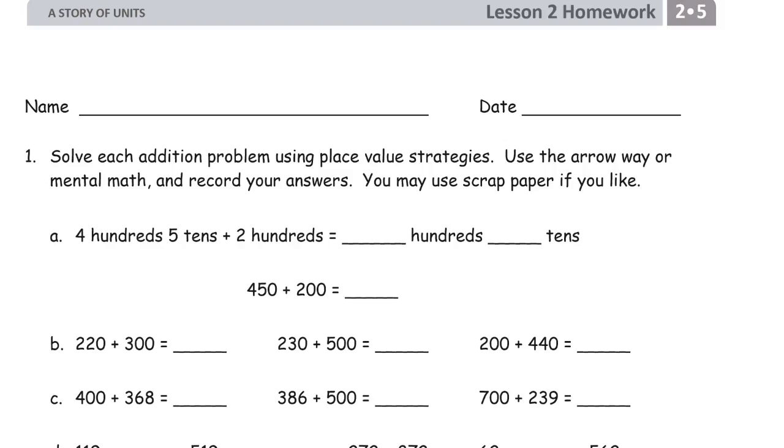Welcome to the homework for lesson two. This is second grade module five. Write your name here first please. Solve each addition problem using place value strategies. Use the arrow way or mental math and record your answers. You can use scrap paper if you like.